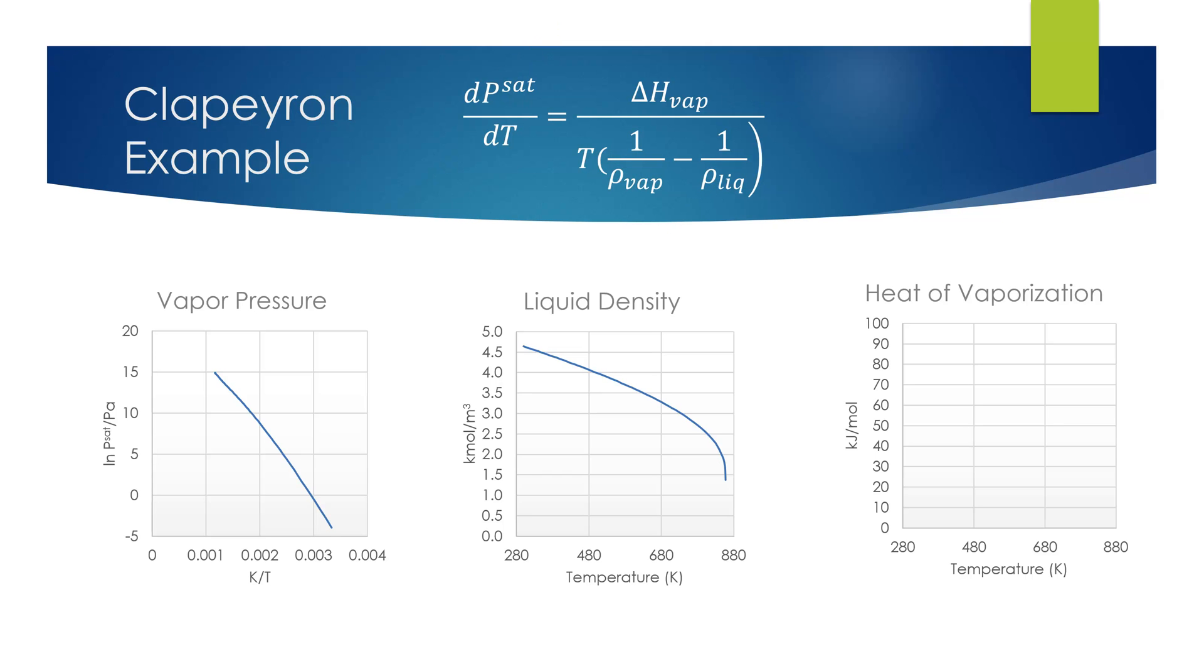As seen here, this compound has good vapor pressure and liquid density data over a fairly wide range of temperatures. For the heat of vaporization, two different data sets have been reported in the literature.